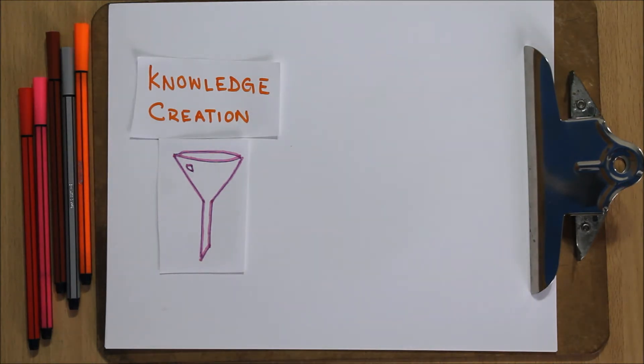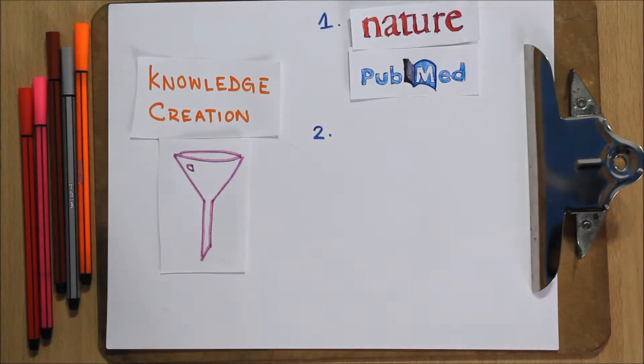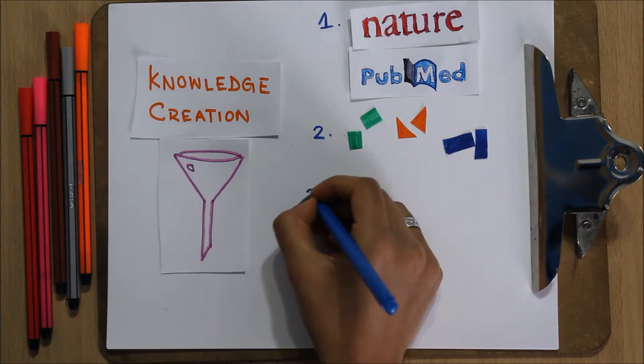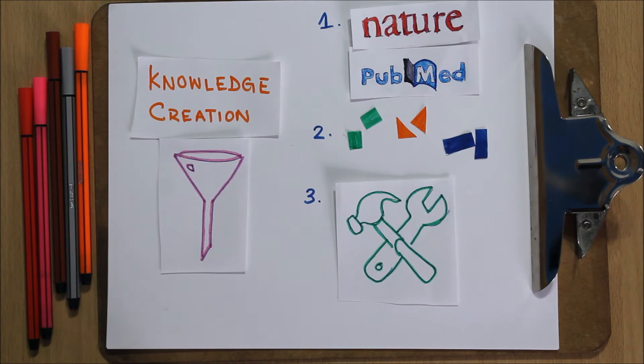The main steps of knowledge creation are inquiry into primary literature, evaluation and grouping of relevant ideas, and the development of knowledge tools such as practice guidelines or decision aids.